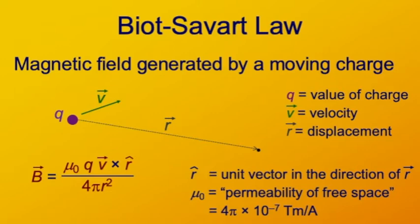Its defined value used to be 4π × 10⁻⁷ tesla·meters per ampere. It now has a measured value, which is essentially the same as 4π × 10⁻⁷ tesla·meters per ampere, but that can change as measurements become more accurate.